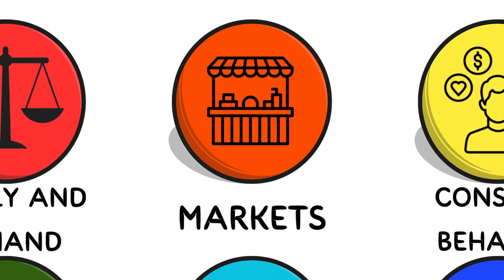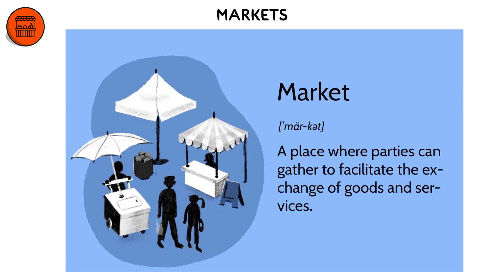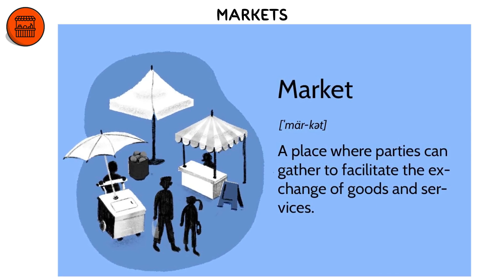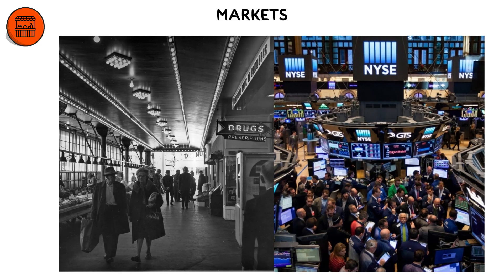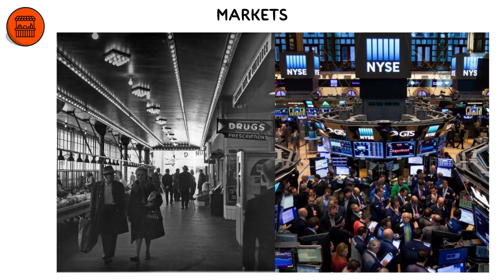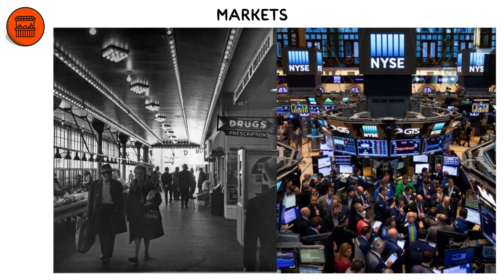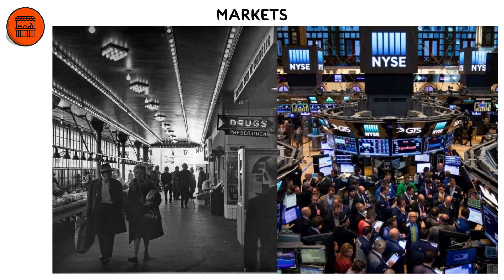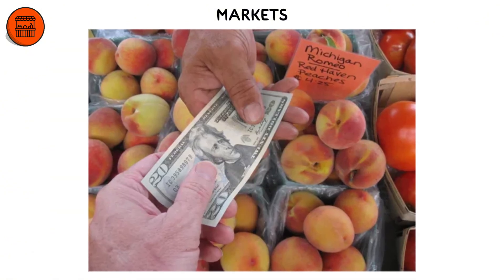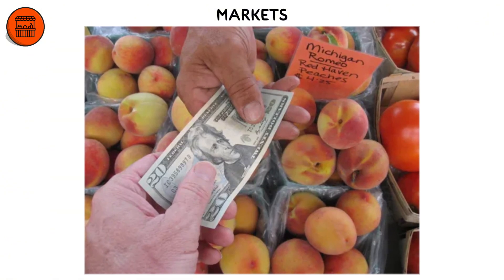A market is any system or environment where buyers and sellers exchange goods, services, or assets. Markets can be physical, like a farmer's market or car dealership, or digital, like Amazon or the stock exchange. Their main purpose is to coordinate economic activity by matching supply with demand through prices.